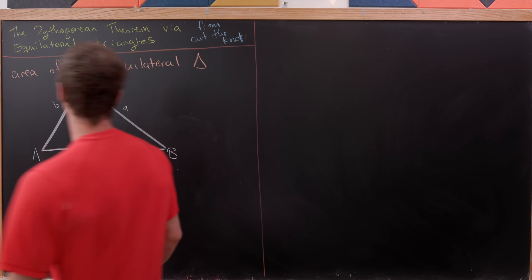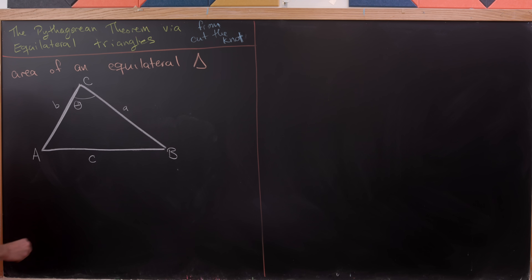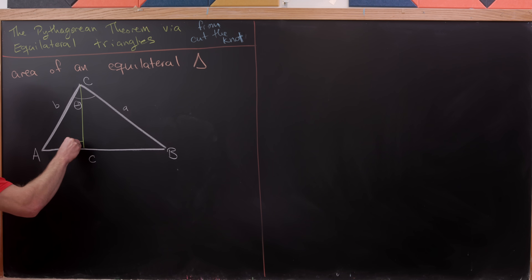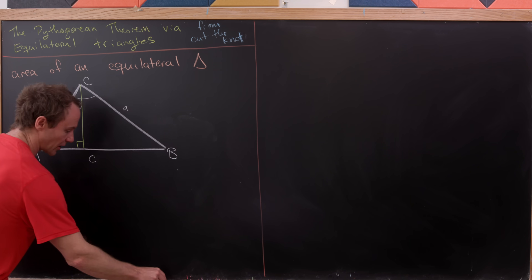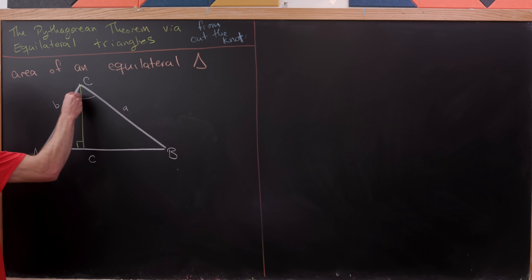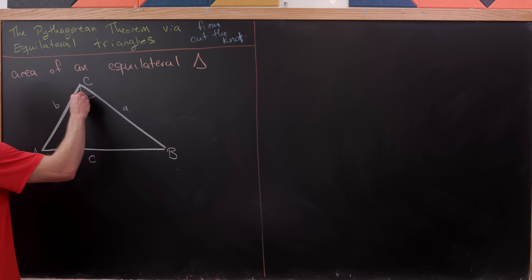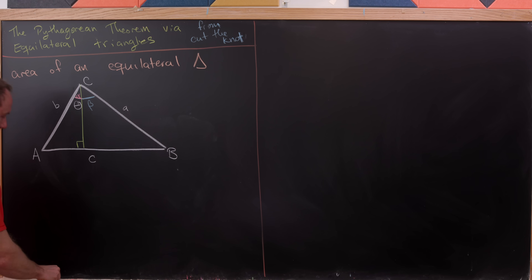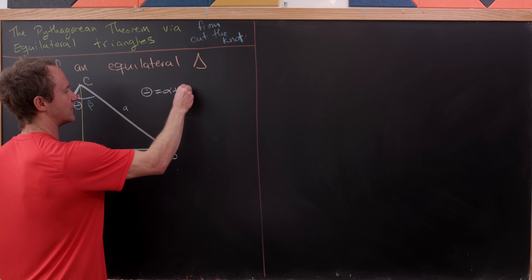What we're going to do now is drop an altitude from C down to line segment AB. And that's going to naturally split this angle theta into two parts. I'm going to call the first part angle measure alpha, and the second part angle measure beta. So obviously, theta is equal to alpha plus beta.